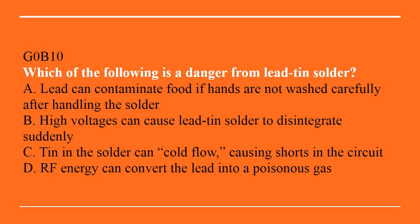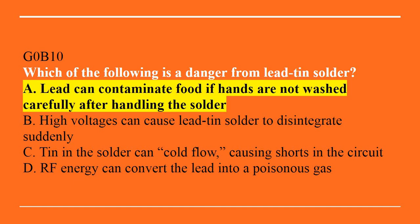G0B10: Which of the following is a danger from lead-tin solder? A, lead can contaminate food if hands are not washed carefully after handling the solder. B, high voltages can cause lead-tin solder to disintegrate rapidly. C, tin in the solder can cold flow, causing shorts in the circuit. Or D, RF energy can convert the lead into a poisonous gas. Correct answer is A — lead can contaminate food if hands are not washed carefully after handling the solder.